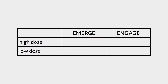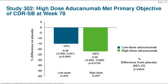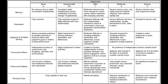So what did Biogen present to the FDA? Well, there were two trials, and both had high-dose and low-dose arms. One of the trials showed no benefit. And in the other trial, only the high-dose arm showed a 22% relative reduction in the rate of cognitive decline from baseline, or what amounted to a difference of 0.4 on a scale of 18 on the Clinical Dementia Rating scale sum of boxes.